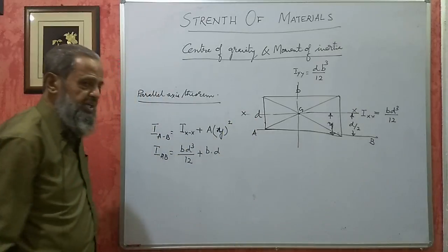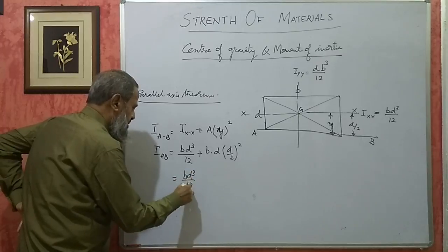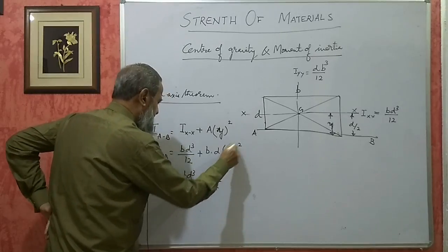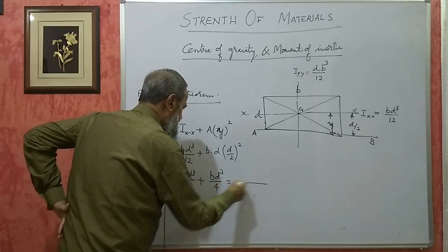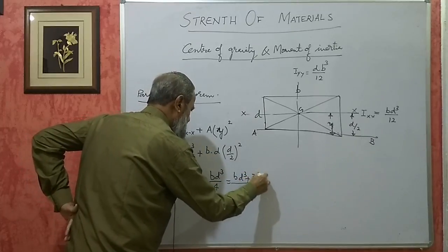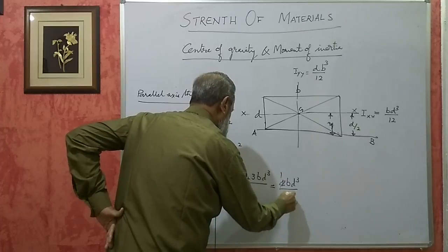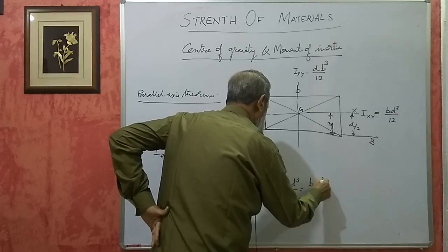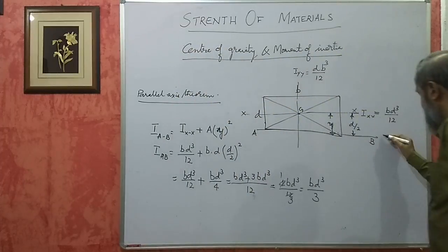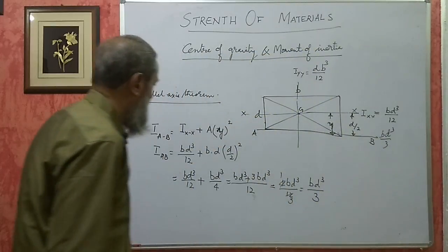So IAB = BD³/12 + (B×D)×(D/2)² = BD³/12 + BD³/4. The LCM is 12, giving BD³ + 3BD³ = 4BD³, so IAB = 4BD³/12 = BD³/3. If the moment of inertia about the centroidal axis is BD³/12, about the base axis it will be BD³/3. This is how the moment of inertia is shifted from one axis to another parallel axis using the parallel axis theorem.